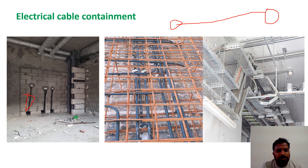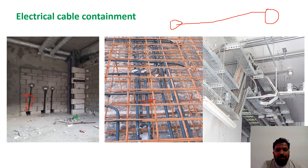These containments can either be PVC conduits — you can see this one, this is a PVC conduit, exactly this one — installed inside the block walls. Whereas for slabs or suspended runs, you can take cables through GI conduits, as you can see here, GI conduits, and cable trays.